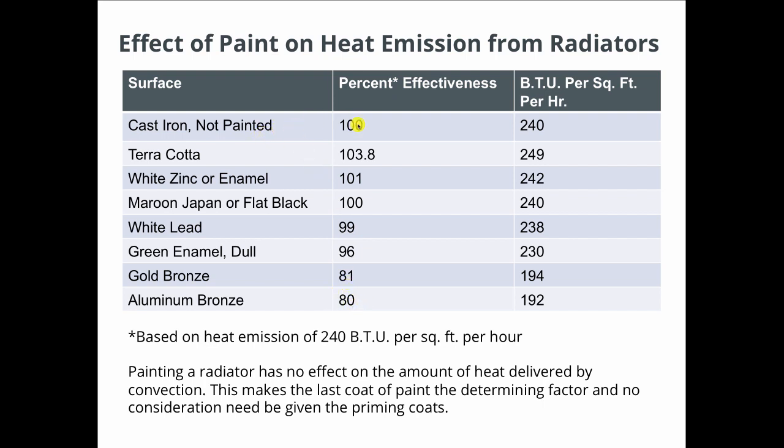So a radiator that's bare, not painted at all, puts out 240 BTUs per hour. If you paint it with this aluminum bronze paint, the output drops to 192 BTUs per hour. And it's only the last coat that matters.